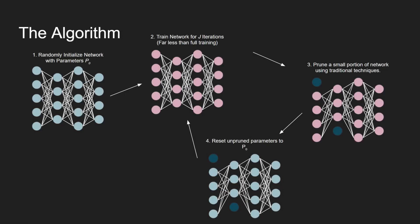Thus, they came up with the following algorithm which prunes the network initialization. The first step is to initialize the neural network, keeping track of these parameters, denoted by P0.